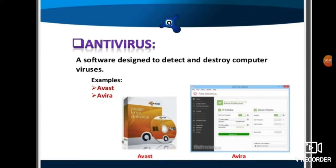Antivirus has already been discussed in chapter one as a network safety feature. It is software designed to detect and destroy computer viruses. Various categories of computer viruses replicate in the computer, hack it, and harm files. Software used to detect and destroy these viruses is called antivirus. Examples include Avast and Avira.